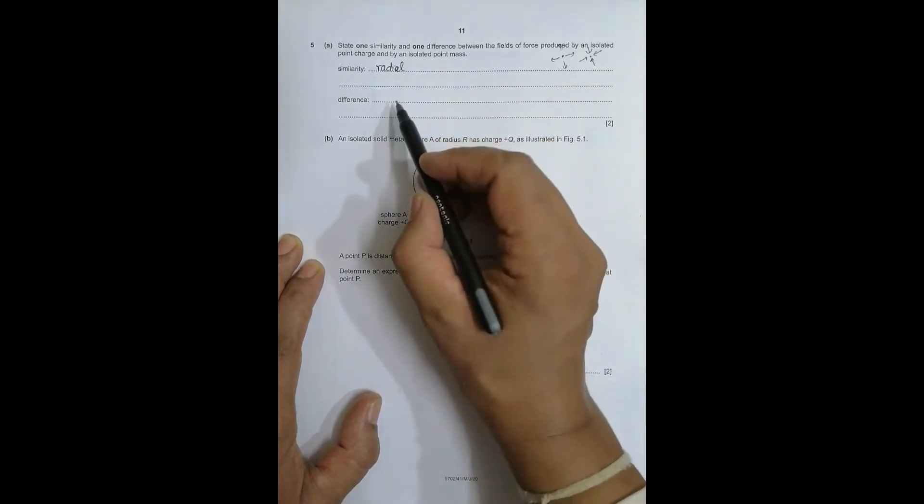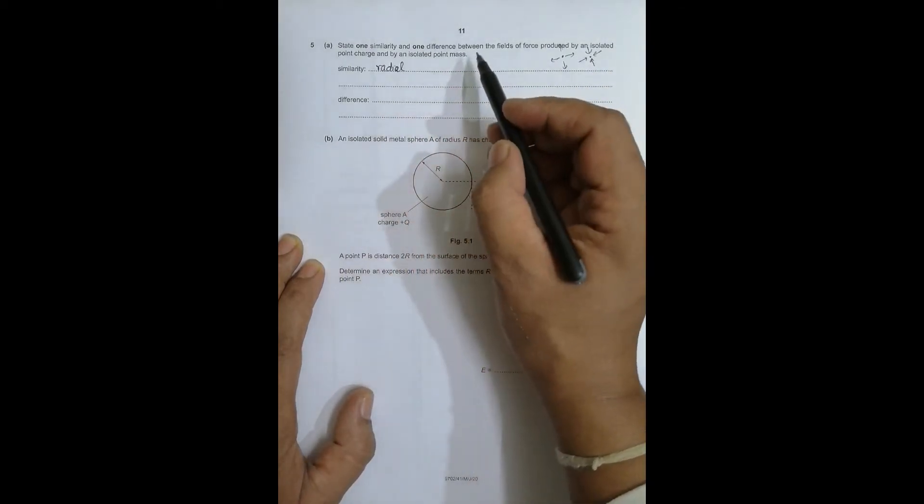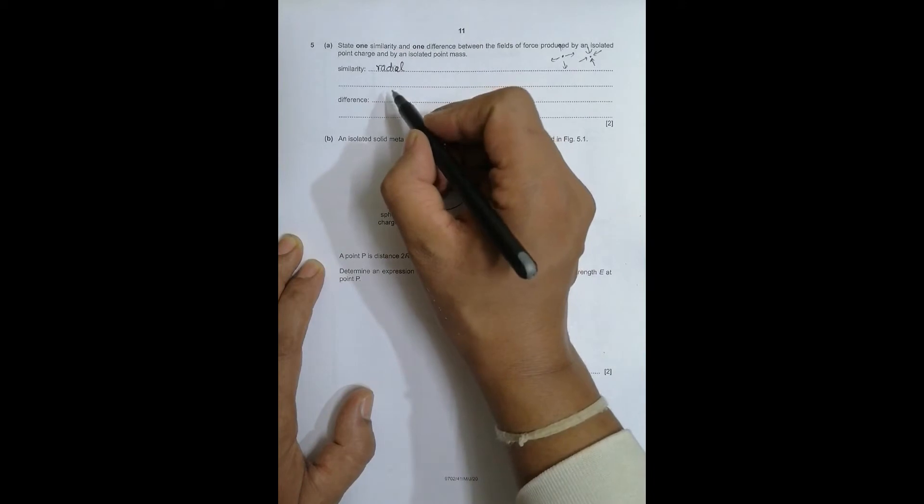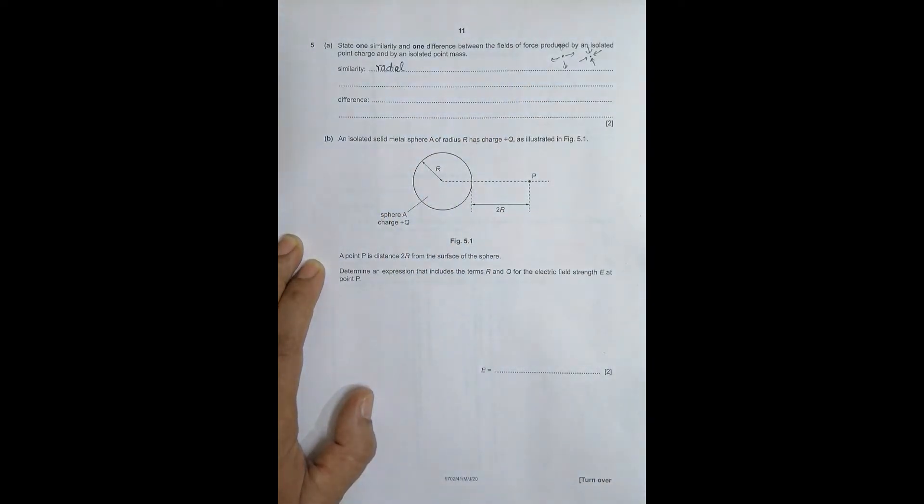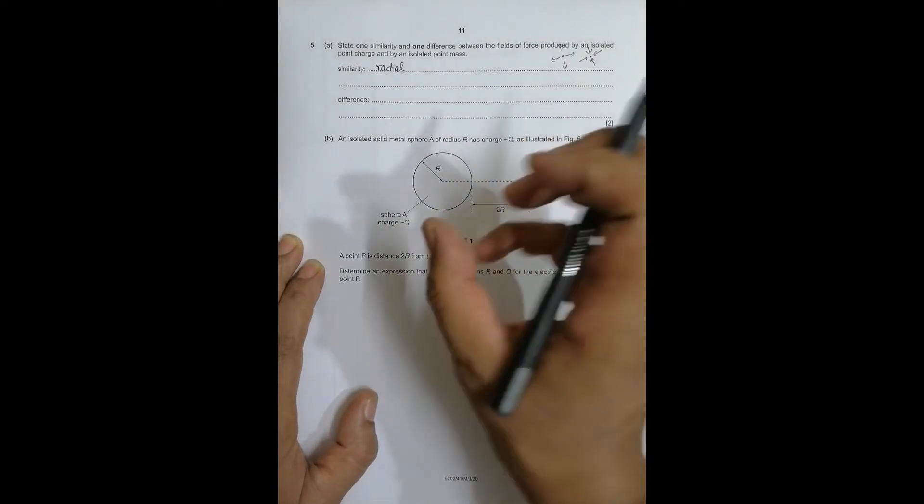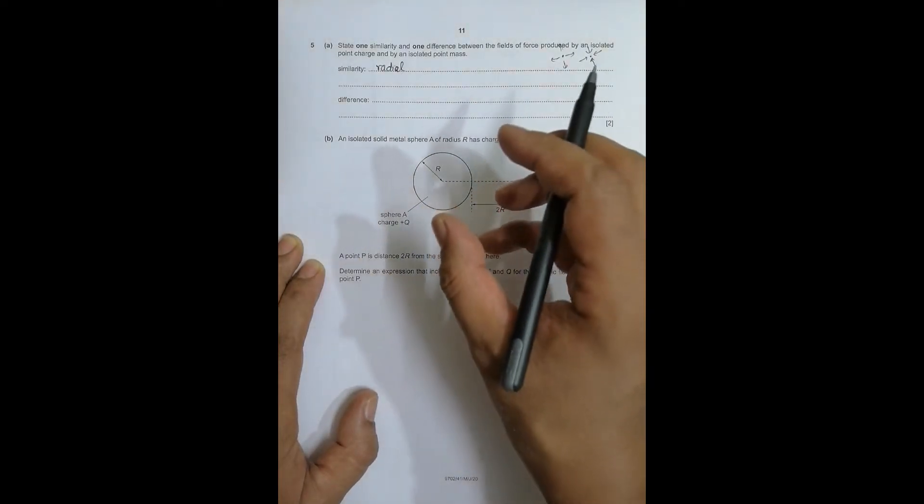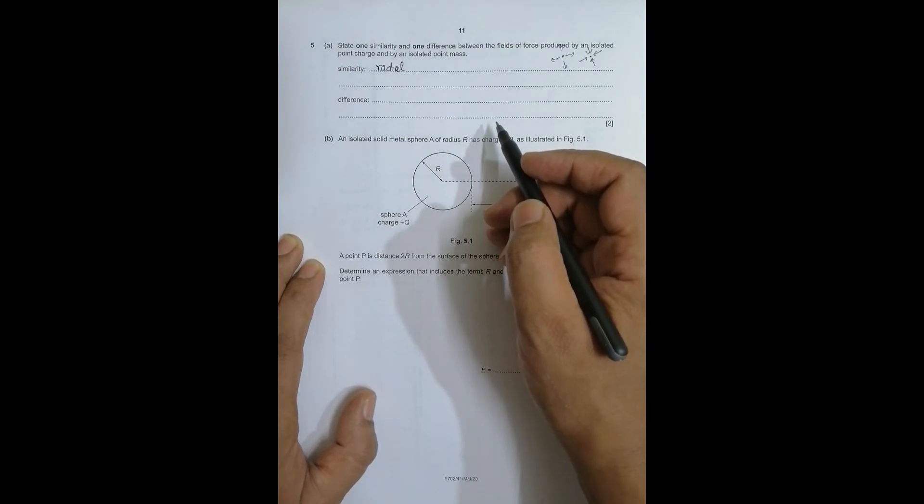The difference is that in case of electric field it could be attractive or repulsive force, meaning the field could be outward or inward. But in case of gravitational field it is just inward, towards that mass, because gravity is always attractive.